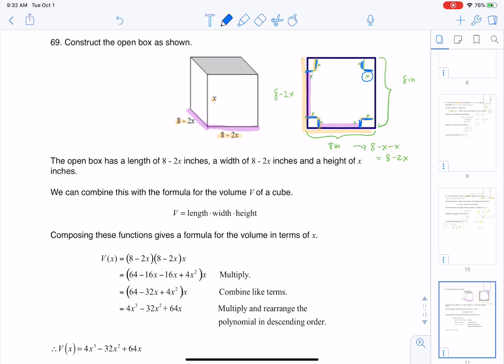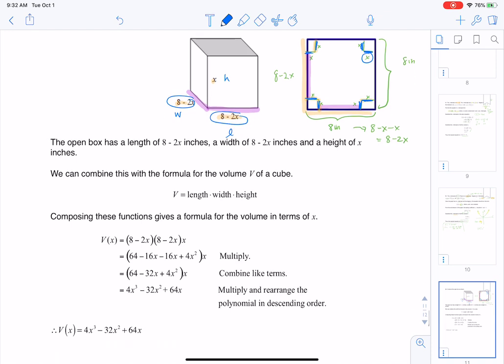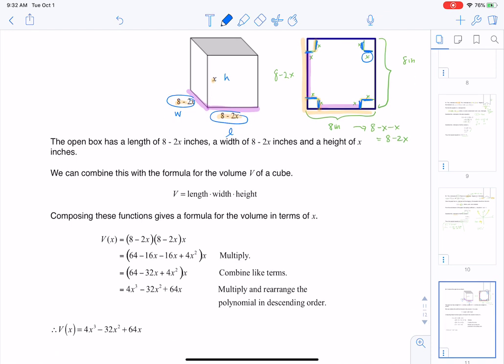So if you start to look at the dimensions, we've got a base of 8 minus 2x, or I should say length times width. So we've got a length of 8 minus 2x, a width of 8 minus 2x, and a height of x. And that's where I'm coming from when I say length times width times height is the volume of a box, and I've got 8 minus 2x, 8 minus 2x, and then x.